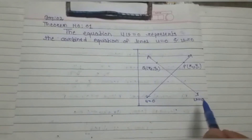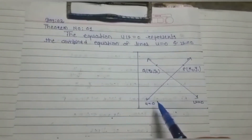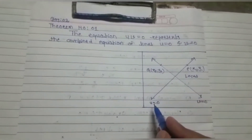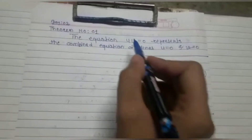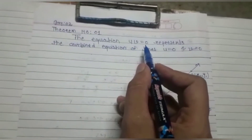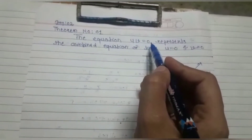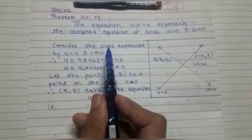...then from these two lines, I will first consider a point P(x1, y1) on the line u = 0. By the definition of locus, point P will satisfy the equation u = 0. We will then consider the same point on the line uv = 0, and if this point satisfies the equation uv = 0, then we can say it also lies on uv = 0. In this way we will prove this theorem.